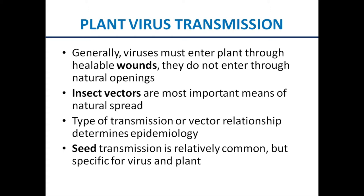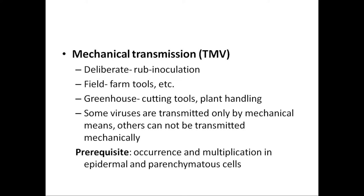There are a variety of modes of transmission of plant viruses. Mechanical transmission — one prime example is tobacco mosaic virus (TMV). It can be done by rubbing an infected leaf with a healthy leaf. Rubbing causes injury to both leaves. When the infected leaf is injured, viruses come out of the cell, and when the healthy leaf is wounded, those viruses enter it. This is a method of transmission of tobacco mosaic virus, and there are other viruses which are also transmitted mechanically.